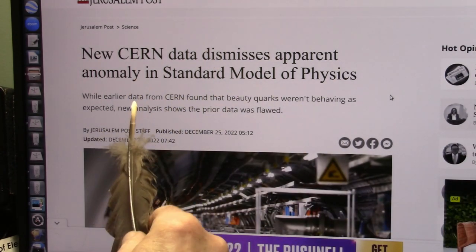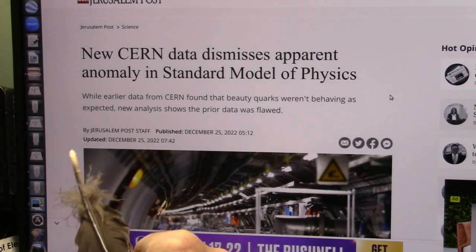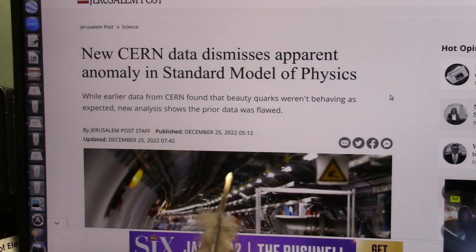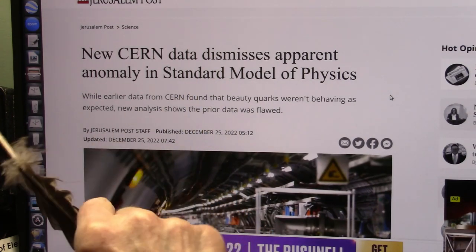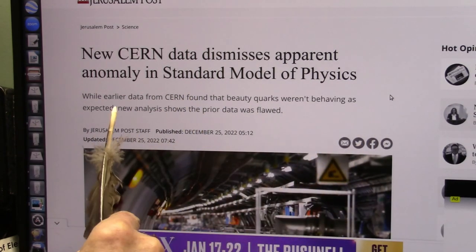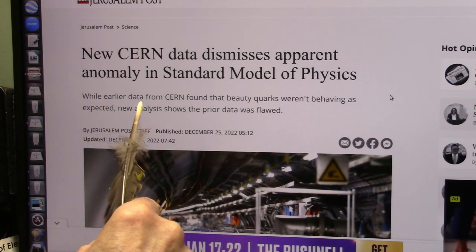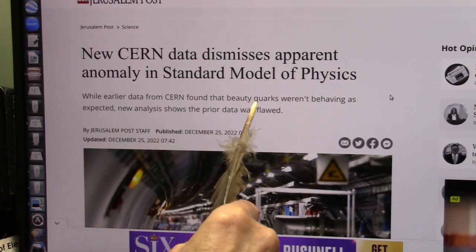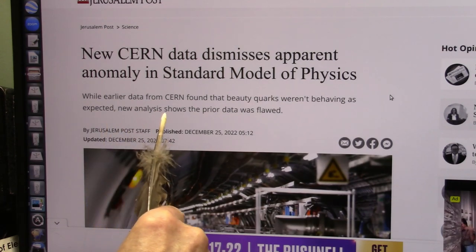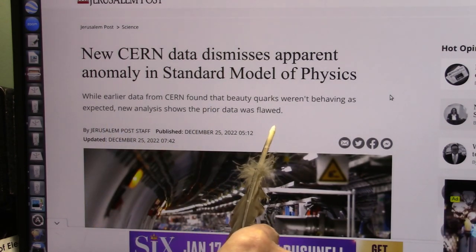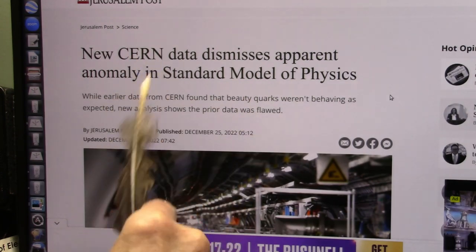Now, they say they're dismissing the anomaly that they found, which shows that my research is correct and theirs is wrong. Earlier data from CERN found that beauty quarks weren't behaving as expected. New analysis shows the prior data was flawed. So they were wrong because they were right.